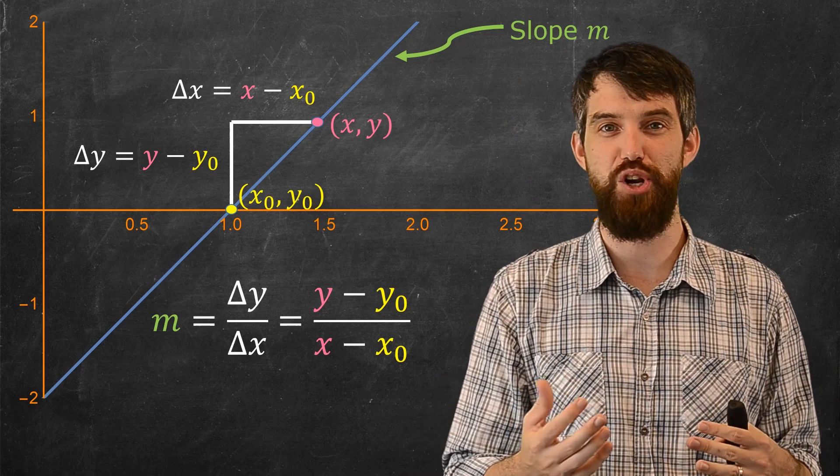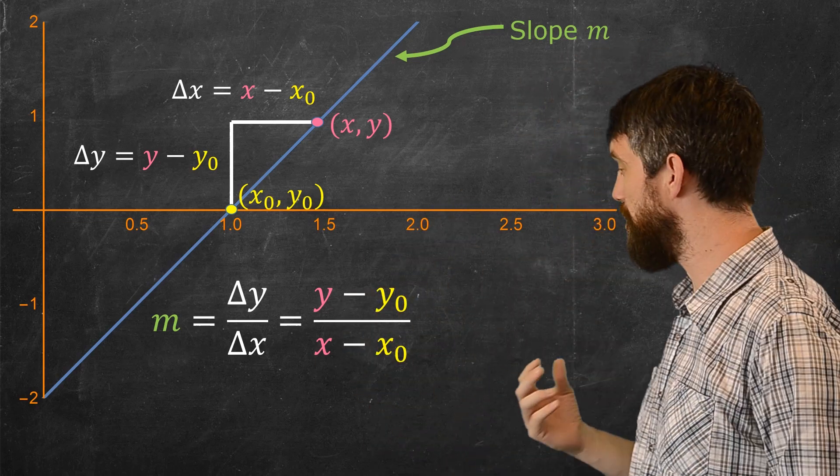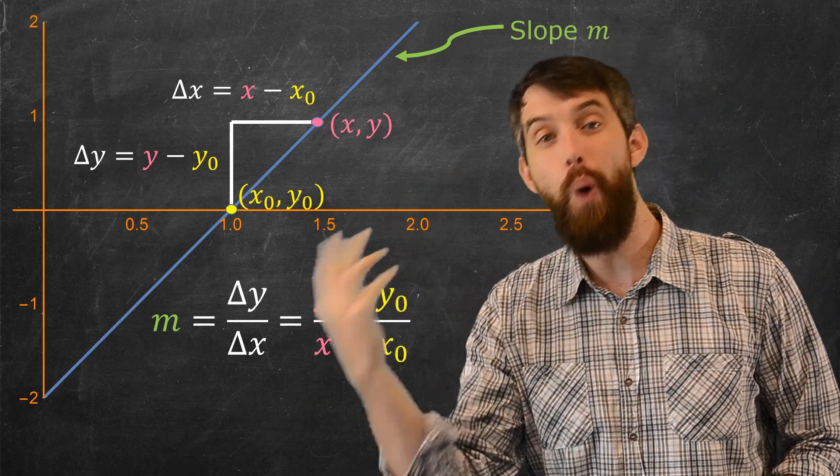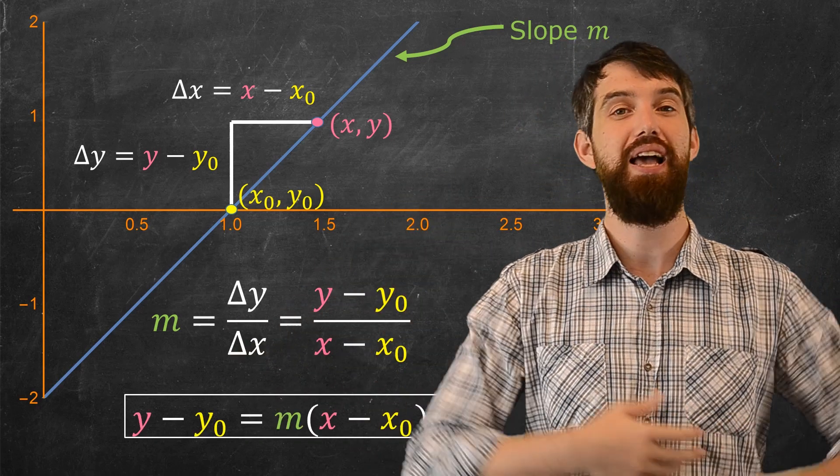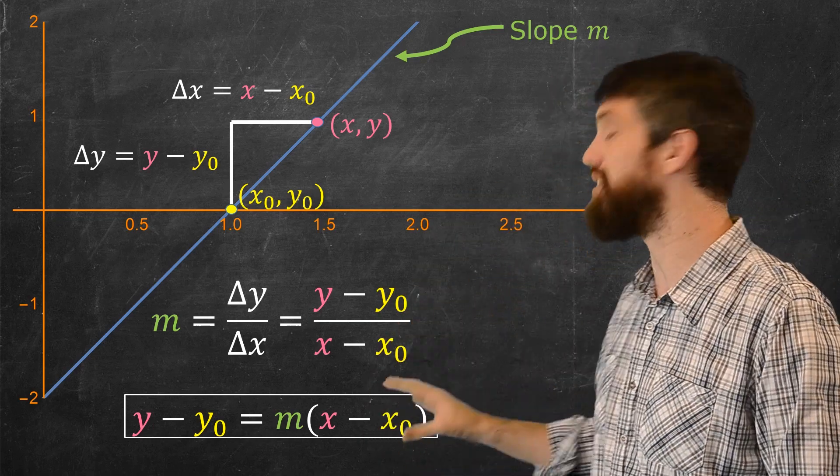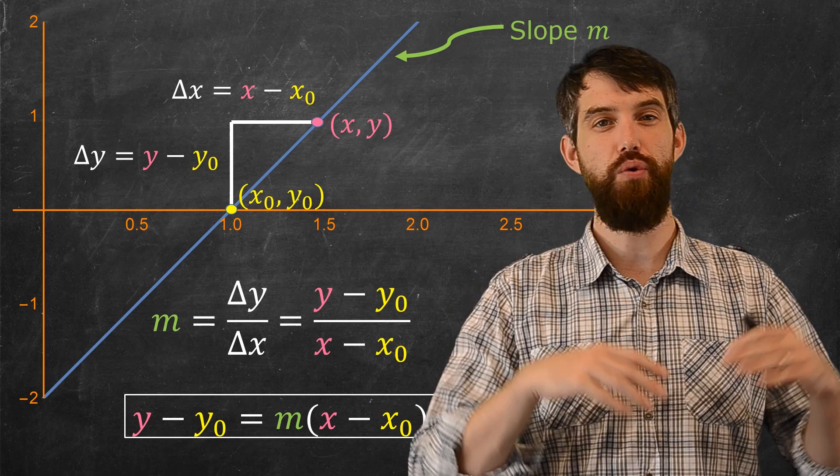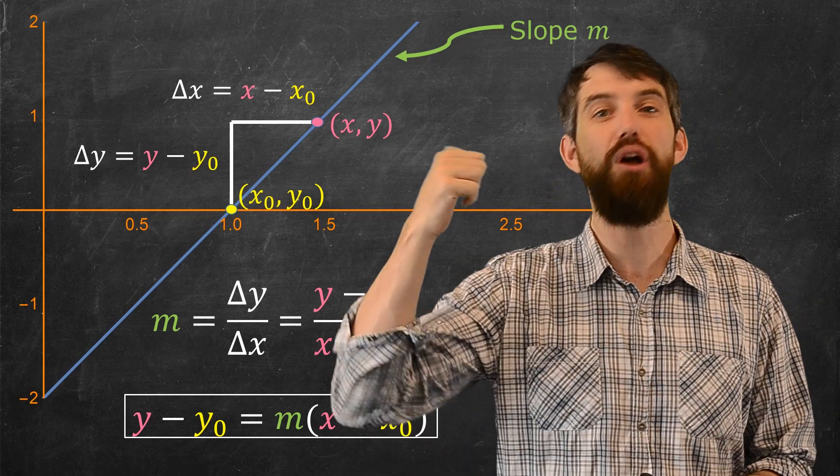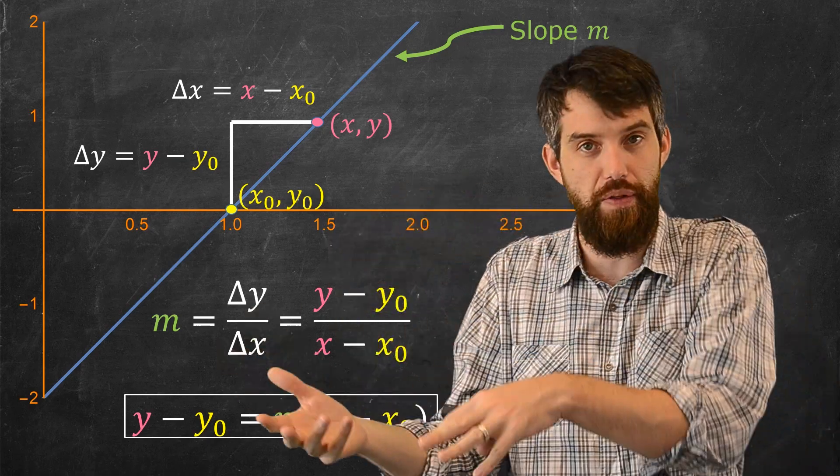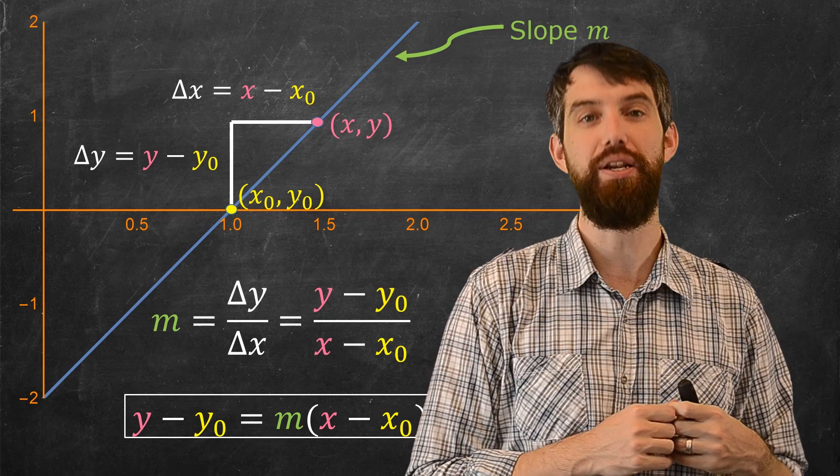Then, the slope is the rise over the run. Or in other words, it is the change in y divided out by the change in x. In other words, it's y minus y₀ over x minus x₀. And then, the last thing I'm going to do before I finally have my point-slope formula is that I'm just going to go and rearrange this expression, and I'm going to bring the y minus y₀ to the one side and say that this is equal to m times x minus x₀.